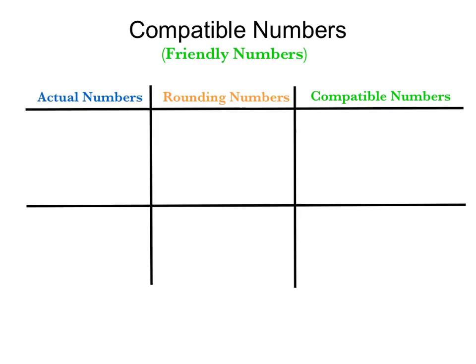That's right, so compatible numbers are numbers that are getting you closer to the actual numbers, so it's still estimating, but you don't have the strict rules like you do with rounding. Exactly. Okay, so the way we're going to talk about this is we're just going to use some examples.